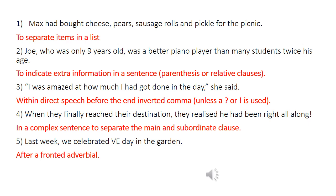Okay, how do you think you did? Let's go through the reasons for each sentence and see if you were right. Sentence number one — commas are needed to separate the items in a list. Without the commas, the reader could easily get muddled about how many items Max bought from the shop. For example, one of the items in this list is sausage rolls. If you missed out the commas or put them in the wrong place, your reader could think that Max bought sausages and rolls as two separate items.